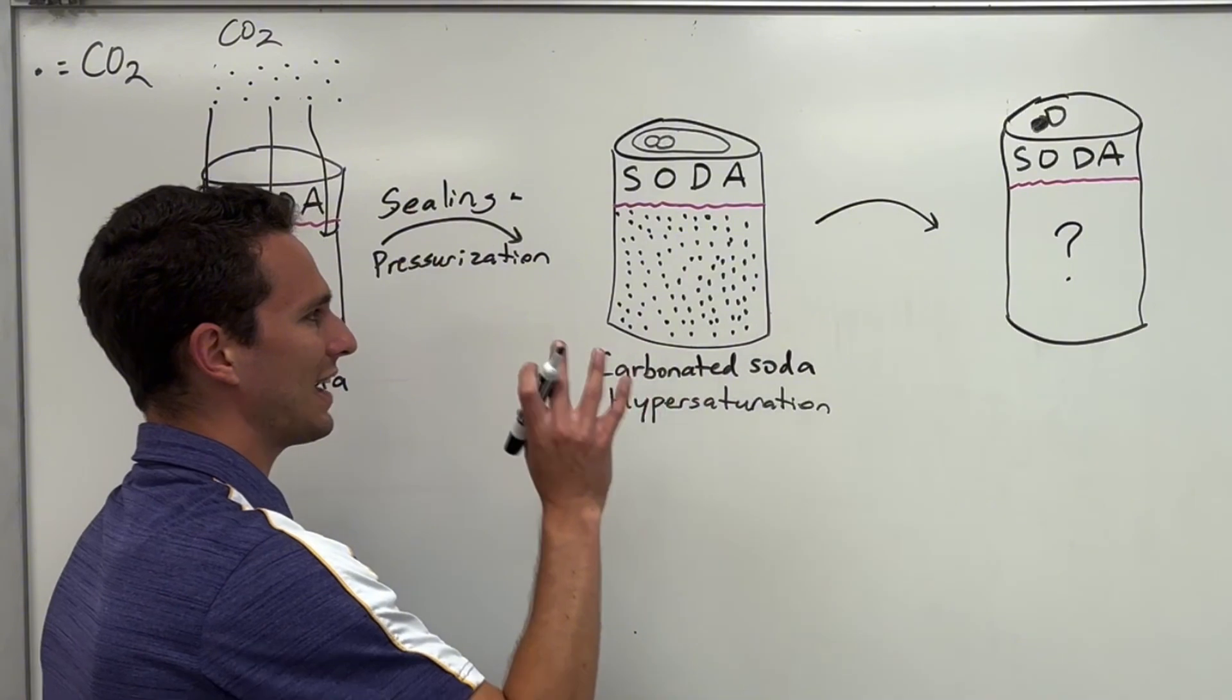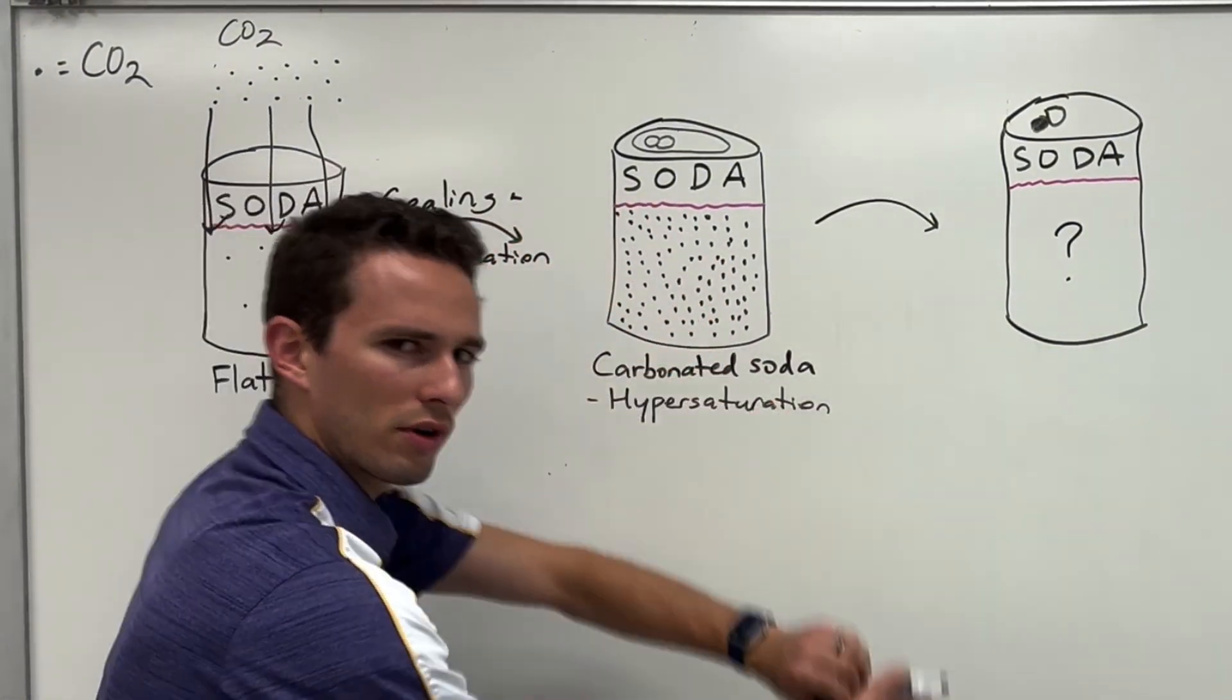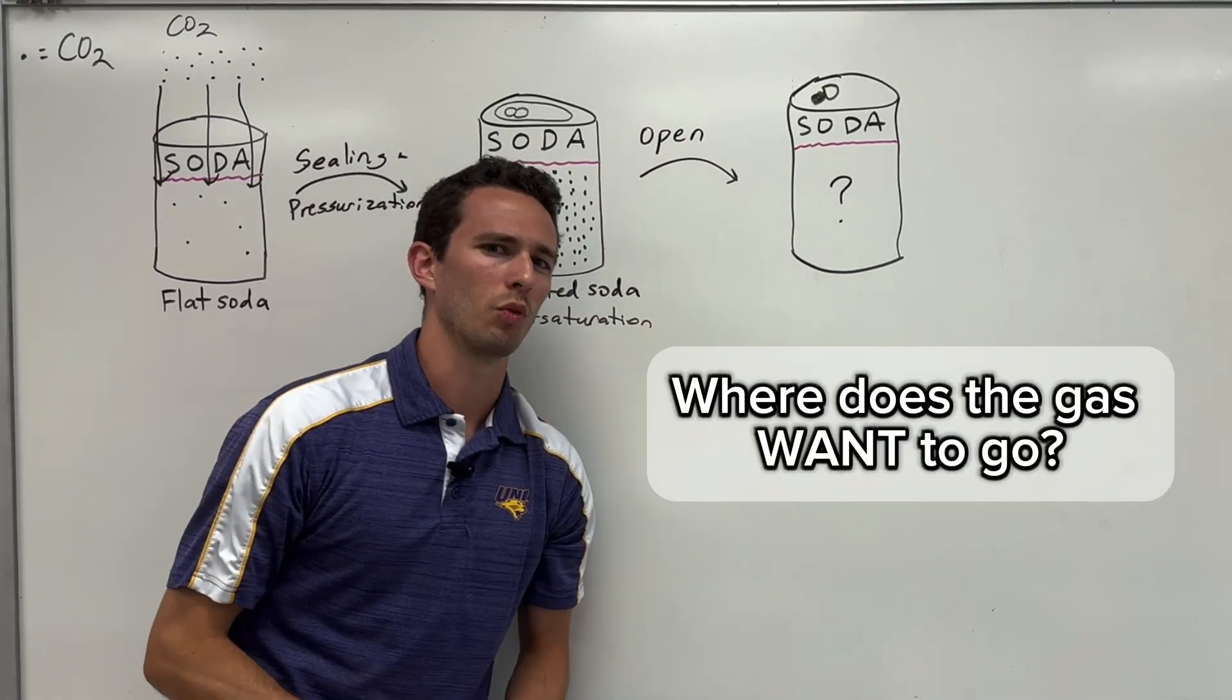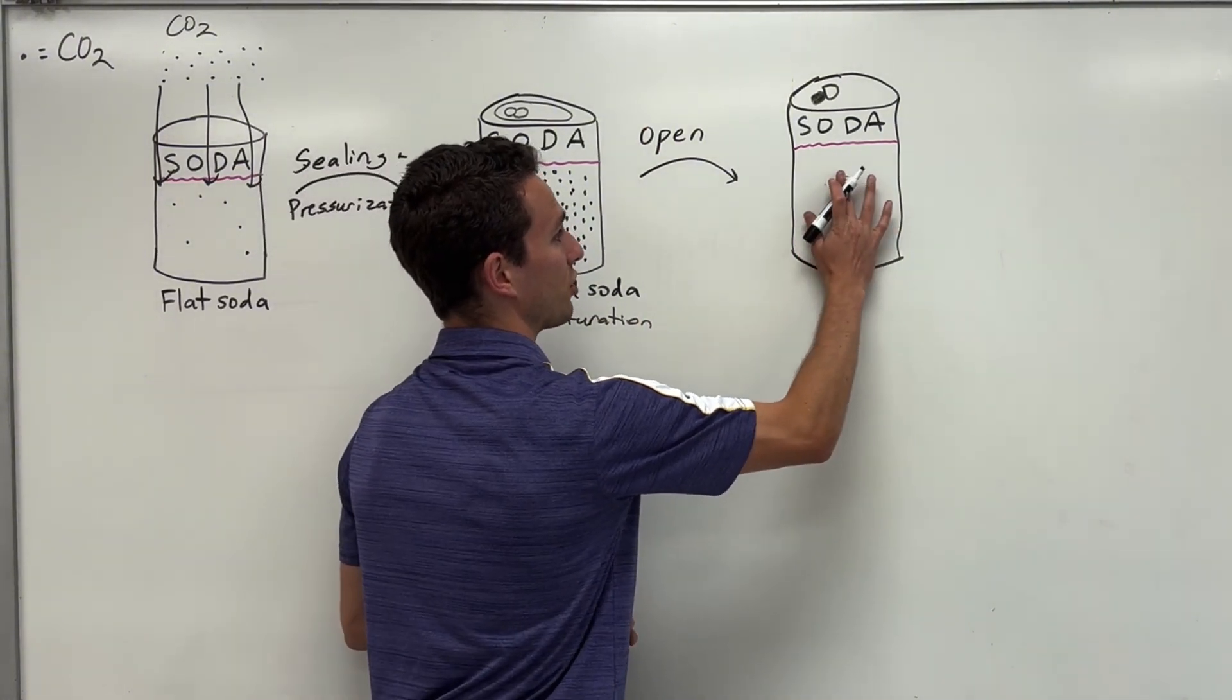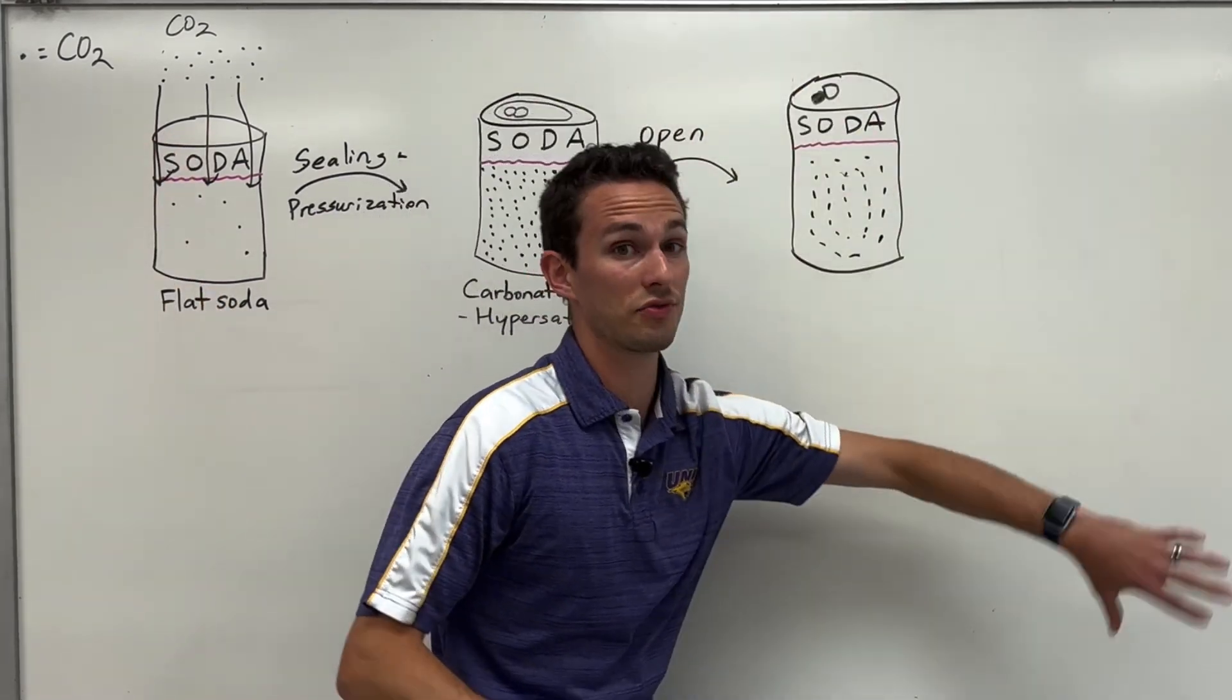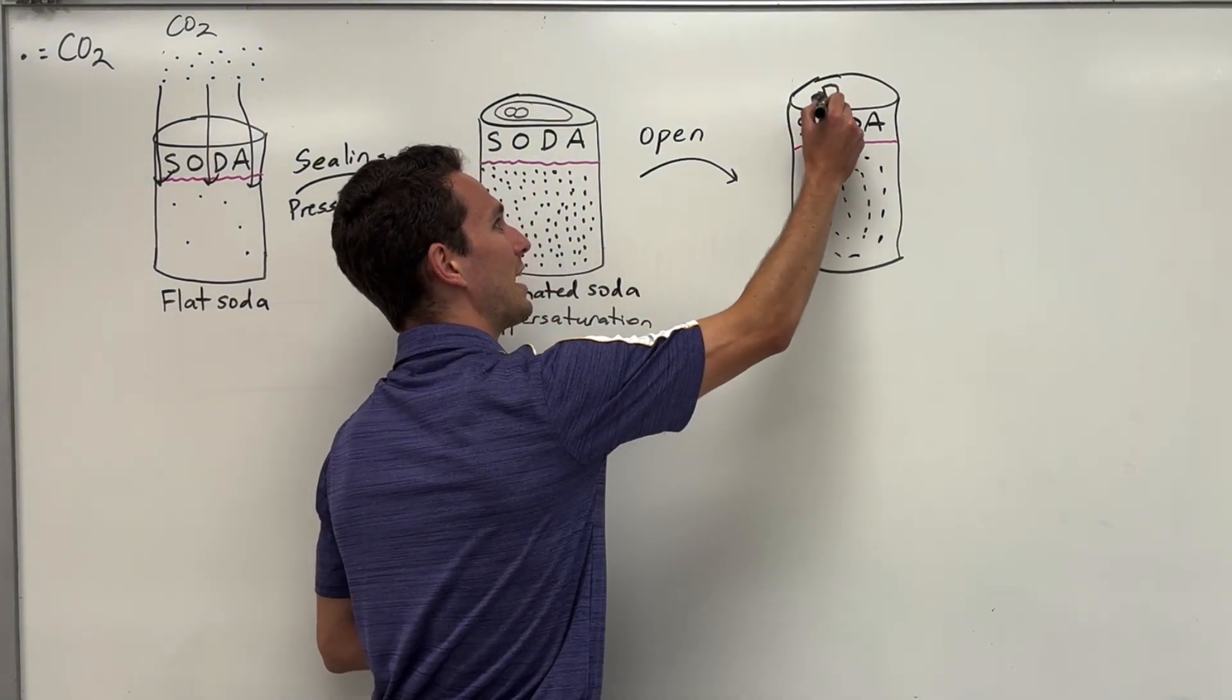Now we know that gases, and basically any fluid, like to go from their high concentration to their low concentration. So let me ask you this, when you open the can of soda, where does the gas want to go? Well, obviously, if it's in super high concentration inside the soda, and we learned from my previous video about partial pressures here, that the atmosphere has very little carbon dioxide outside of it. So the carbon dioxide in the soda wants to escape.